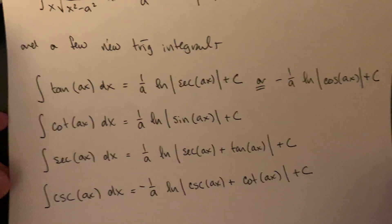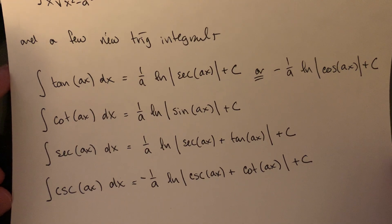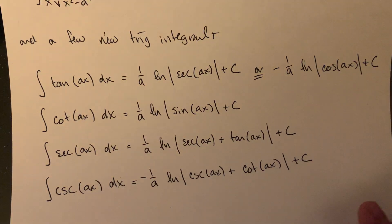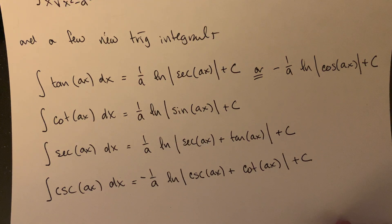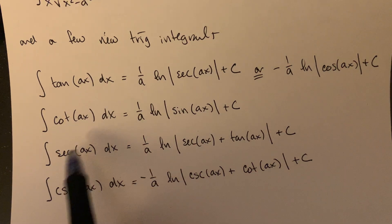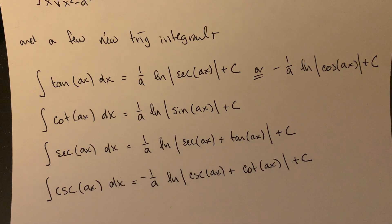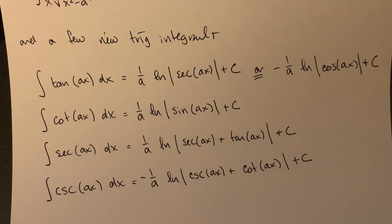The other thing here — I'm not going to derive these formulas, but you can use natural log with some specific trig moves to find antiderivatives for tangent, cotangent, secant, and cosecant. These are generic versions where you have an 'a times x' on the inside; if it's just x, then everything is just x.